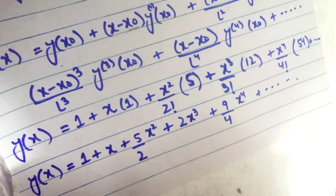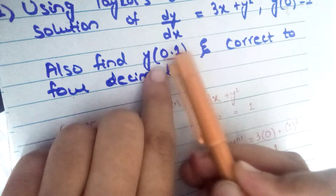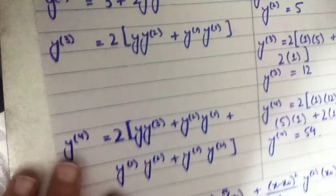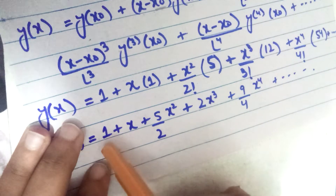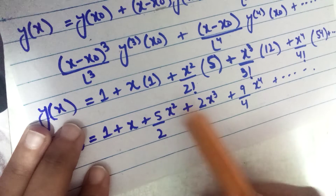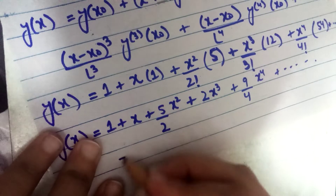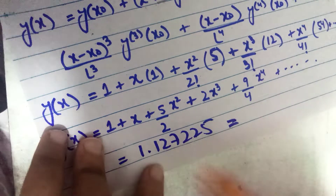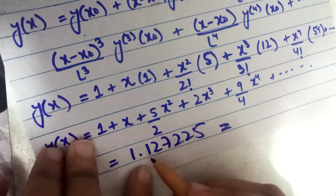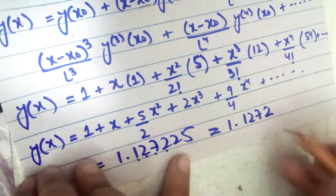The question asks to find y at x = 0.1 correct to four decimal places. Substituting x = 0.1: y = 1 + 0.1 + (5/2)(0.1)² + 2(0.1)³ + (9/4)(0.1)⁴ = 1 + 0.1 + 0.025 + 0.002 + 0.0000225 = 1.1272225. Rounding to four decimal places, the final answer is y = 1.1272.